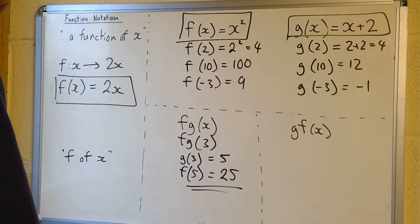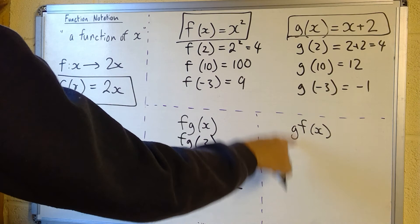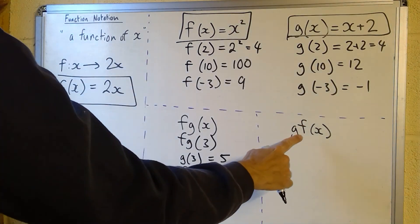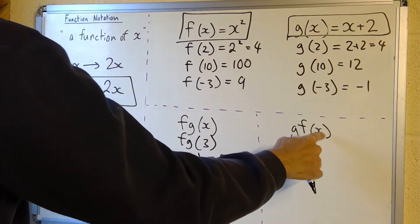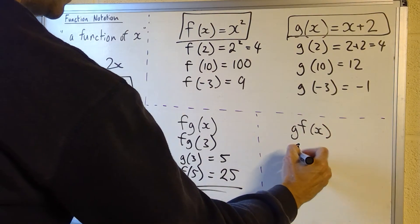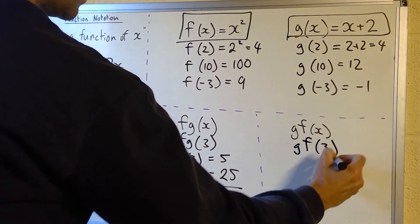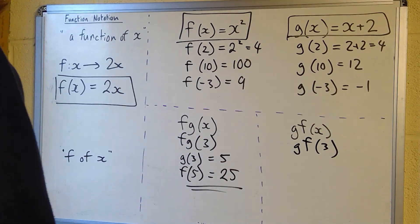I've changed the order here. I've got the same functions but I've changed the order. I've got g of f of x, so g of f of 3. So the f function of 3 is squaring it, so f of 3 is 9.